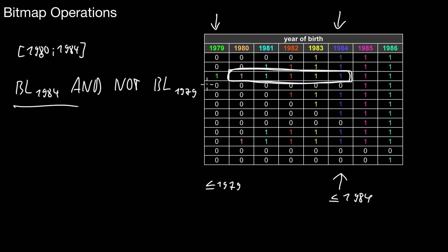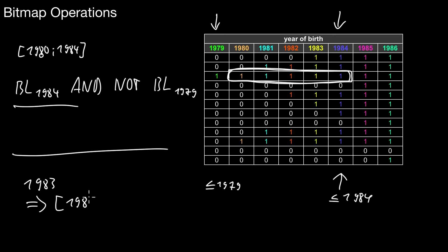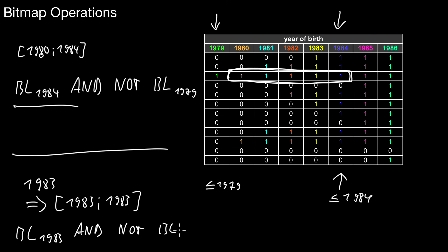The big advantage is that you only have to look at those two bitlists during query processing. The gains depend on how many bitlists would have to be considered in a standard bitmap representing individual values. Here you gain a lot. You can also handle point queries the same way. To get all colleagues born in 1983 — a range from 1983 to 1983 inclusive — we take the bitlist of 1983 AND NOT the bitlist of 1982.